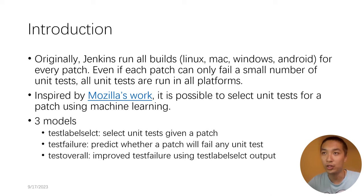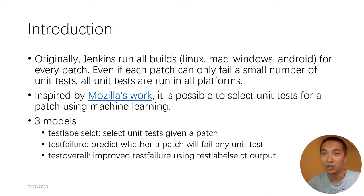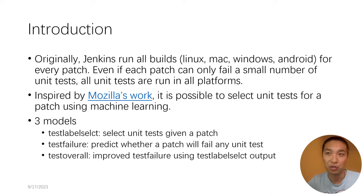In this project, three models are trained. Test Label Select is responsible for selecting unit tests given a patch. Test Failure predicts the overall probability of a patch to fail any unit tests. Because Test Failure has poor performance, Test Overall is introduced as an improved version, which takes Test Label Select's output as its input.